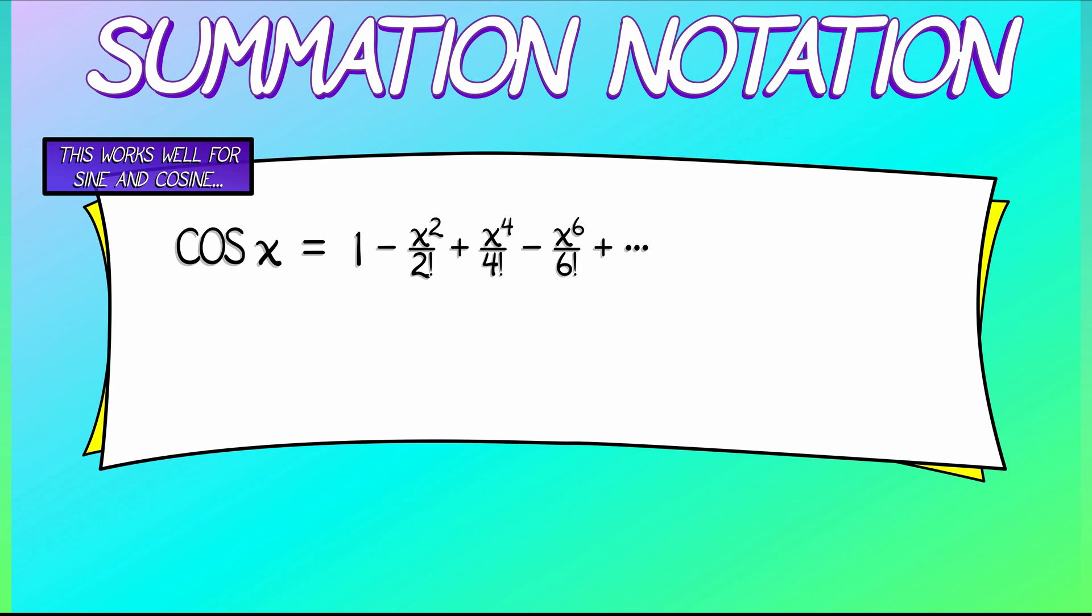And for sine of x, what was that guy? That was x minus x cubed over 3 factorial, plus x to the 5th over 5 factorial, minus x to the 7th over 7 factorial, keep going. How do we convert these into summation notation?